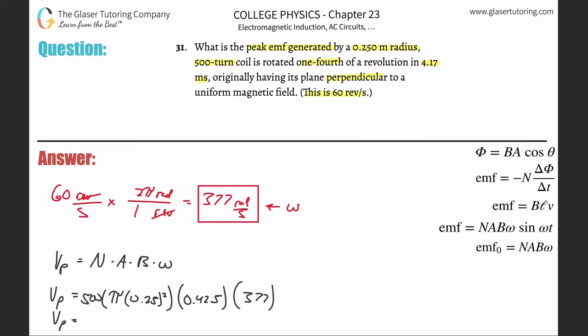Now we plug it into the calculator. So 500 times π times 0.25 squared, multiply by 0.425, and then times 377. I'm getting a value of about 15.7, or 1.57 times 10 to the first power.